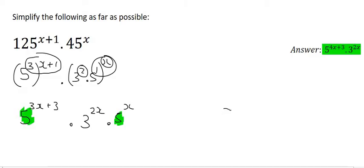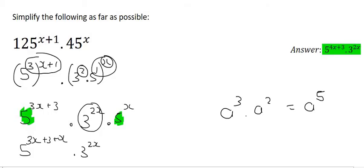And so what should we do with the exponents? I mean, what would you do if you had a 3 and a 2? You would add the exponents, and that would become 5. And so this is going to become 5 to the power of 3x plus 3 plus x. And then this 3 over here, we can't really do anything with that, so we'll leave it as it is.